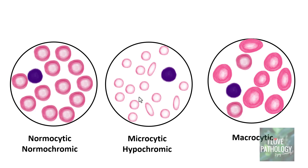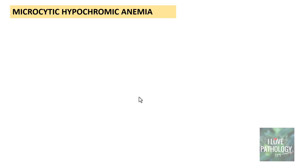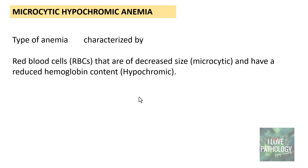So in this session let's learn about microcytic hypochromic anemia. It is a type of anemia characterized by red blood cells of decreased size — that's why they are called microcytic — and also reduced hemoglobin content, which is why they are referred to as hypochromic.